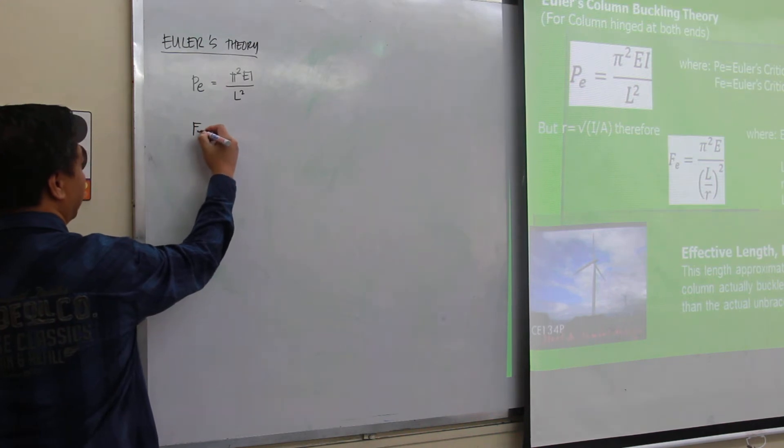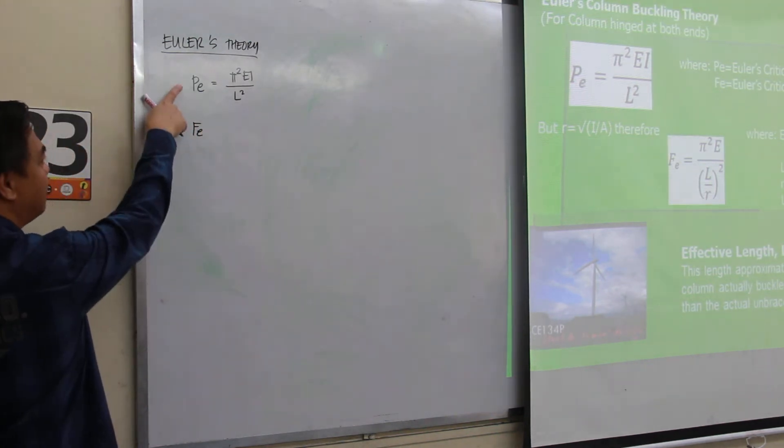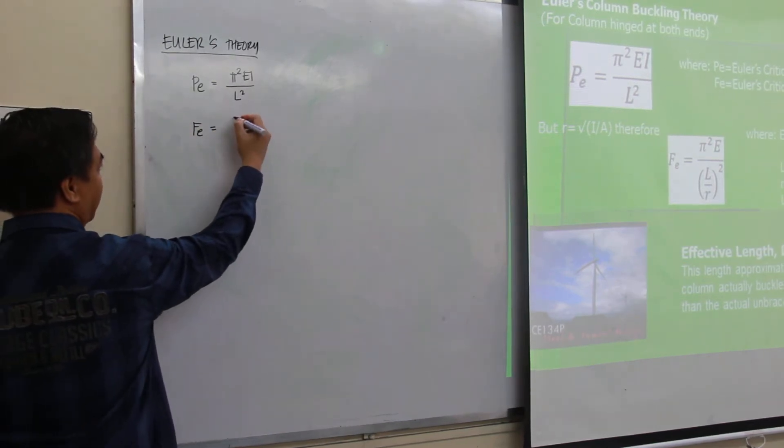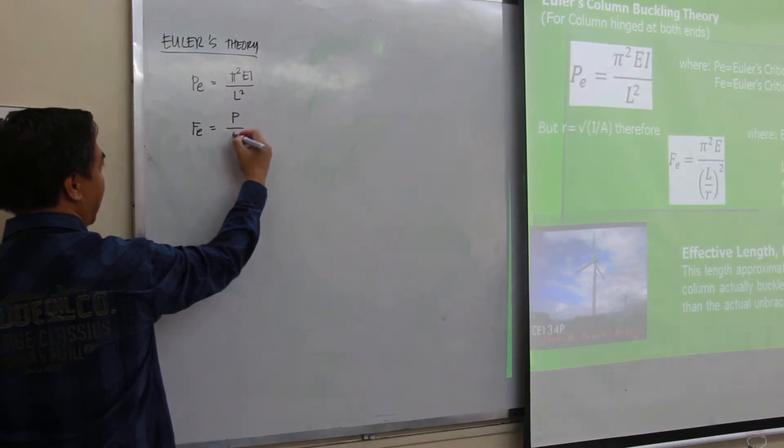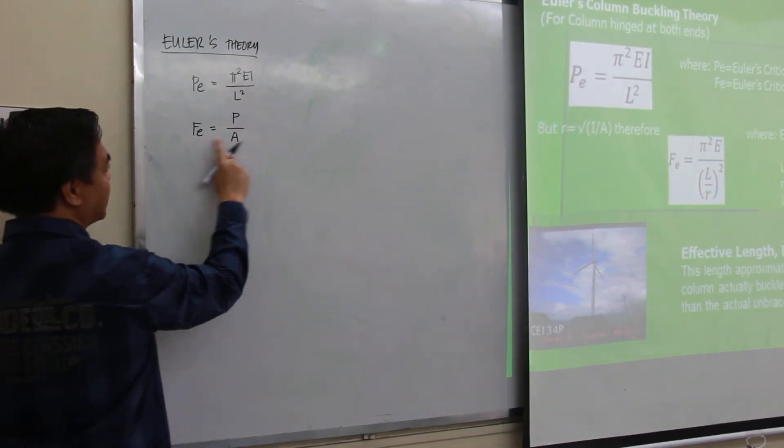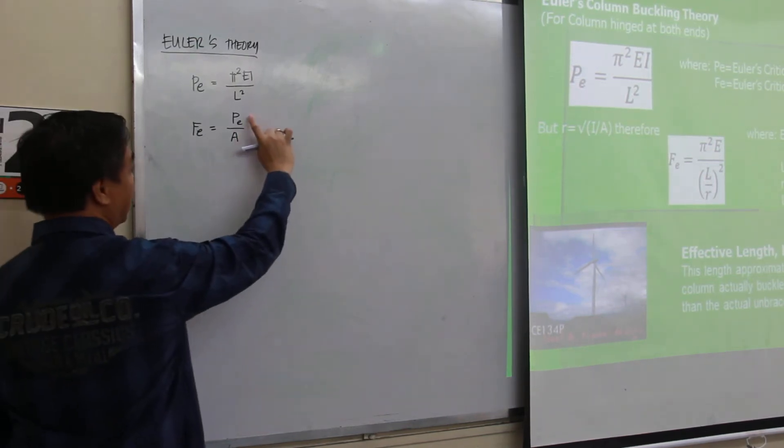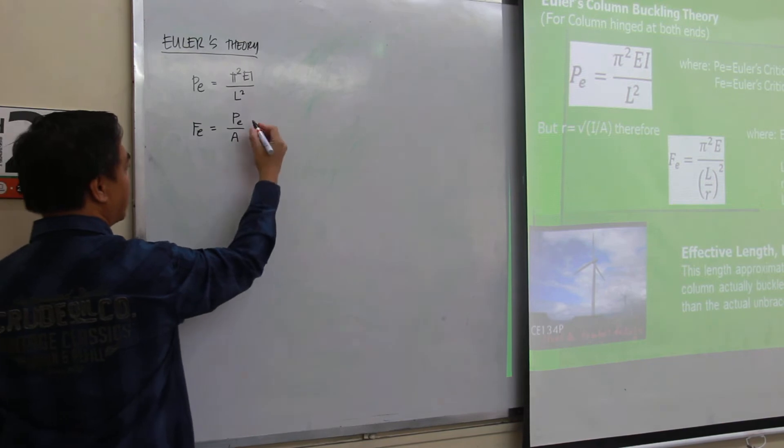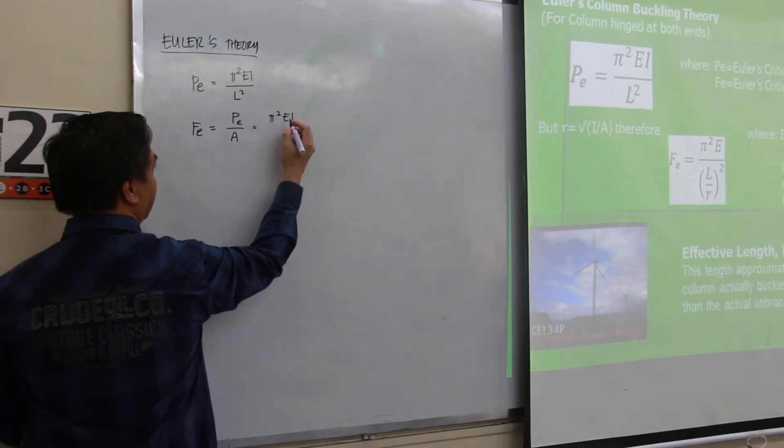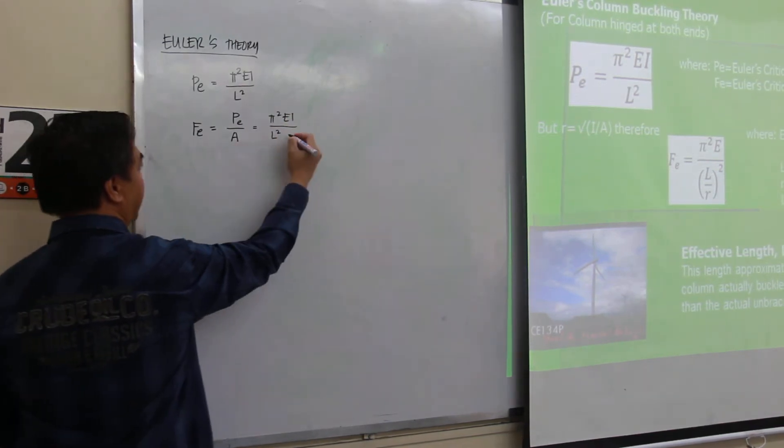This is F_cr, this means stress. And stress is defined as force all over area. If this is Euler's critical stress, it follows that this should be Euler's critical load. So substituting this Euler's critical load from this equation, this will lead you to pi squared EI over L squared, then divided by the area.